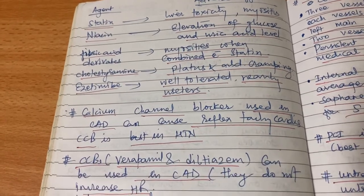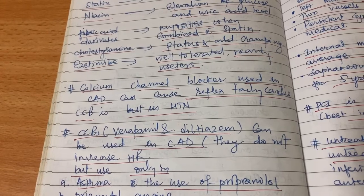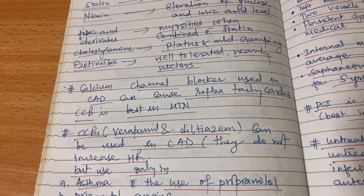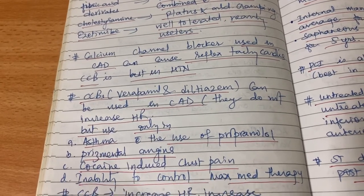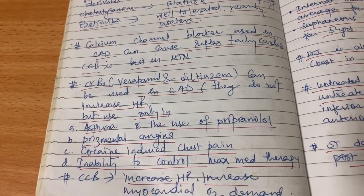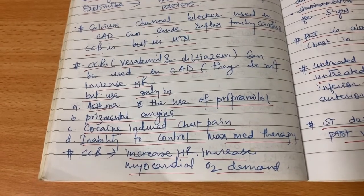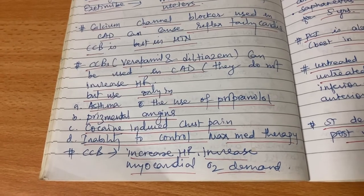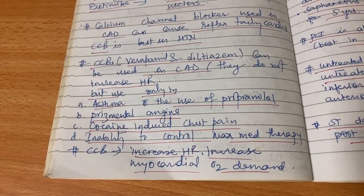Calcium channel blockers verapamil and diltiazem can be used in coronary artery disease — they do not increase heart rate. We use them only in asthma with propranolol. Prinzmetal angina and cocaine-induced chest pain with inability to control on maximal medical therapy are indications. Calcium channel blockers increase heart rate and myocardial oxygen demand — so if a question asks which drug increases myocardial oxygen demand and lists CCBs among options, choose CCB. Common CCBs: nifedipine, diltiazem, amlodipine — most commonly used is amlodipine (2.5 mg, 5 mg, 10 mg).